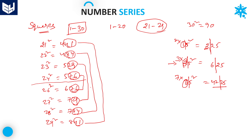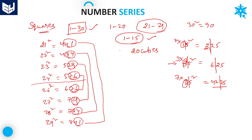These are the combinations: 21 & 29, 22 & 28, 23 & 27, 24 & 26. In this way, you can easily learn squares from 1 to 30. Learning at least 30 squares is very important for every candidate to solve problems in number series. For cubes, you must learn at least 1 to 15, or if possible, up to 20. This has been a brief introduction to number series. In the next session, I will come up with a few problems. I hope you enjoy the class. Thank you.